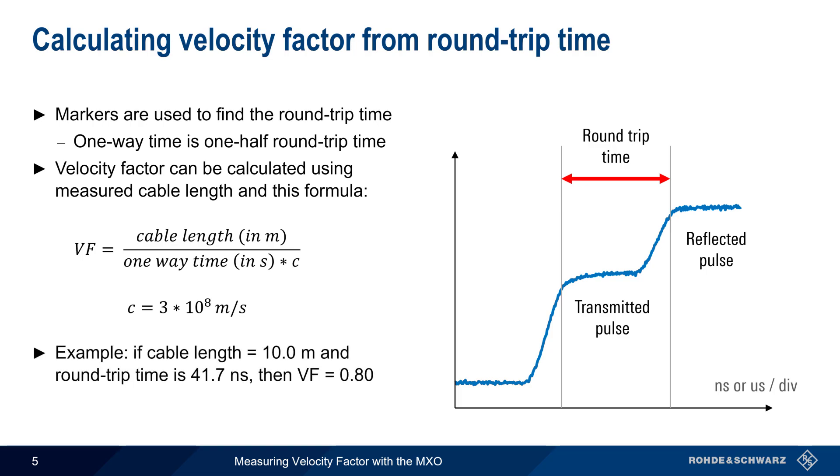For example, if our measured cable length were 10 meters, and the round trip time were 41.7 nanoseconds, then the velocity factor of the cable would be 0.8.